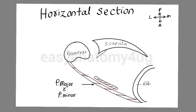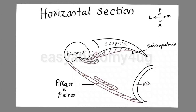Along the posterior wall we will show the subscapularis muscle. Then we will draw other structures of the posterior wall: teres major and latissimus dorsi, which is inserted into the floor of the bicipital groove. Within the bicipital groove we can show the tendon of biceps brachii, and along with it we can show coracobrachialis.